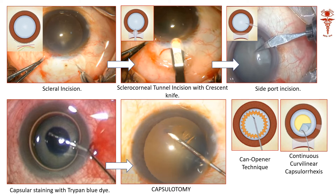Then we use a knife and make a scleral section. The scleral section is called a frown section — can you see? A straight section can also be made, but a frown section is considered to be structurally better.